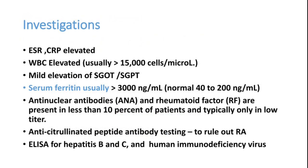For investigations, like any other arthritis, patients can have elevated ESR, elevated CRP, elevated WBC count, and elevated liver enzymes — AST and ALT may be elevated into the hundreds. Most importantly, serum ferritin will be highly elevated, greater than 300 nanograms per milliliter, which is classically seen in Adult Onset Still's Disease. In contrast, viral fevers may show elevated ESR, CRP, and slightly elevated liver enzymes, but serum ferritin will not be elevated to this degree.